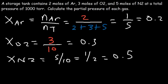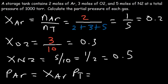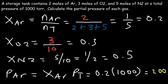Now let's calculate the partial pressure of each gas. The partial pressure of argon equals the mole fraction of argon times the total pressure: 0.2 times 1000. Twenty percent of 1000 is 200, so the partial pressure of argon is 200 torr.